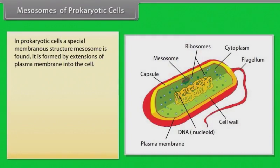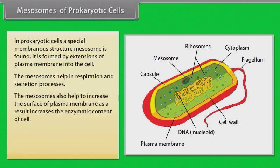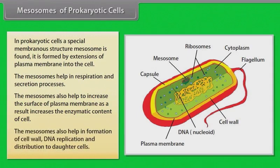Mesosomes of prokaryotic cells: In prokaryotic cells, a special membranous structure called mesosome is found. It is formed by extensions of the plasma membrane into the cell. Mesosomes help in respiration and secretion processes, and also help to increase the surface area of the plasma membrane, thereby increasing the enzymatic content of the cell. Mesosomes also help in formation of cell wall, DNA replication, and distribution to daughter cells.